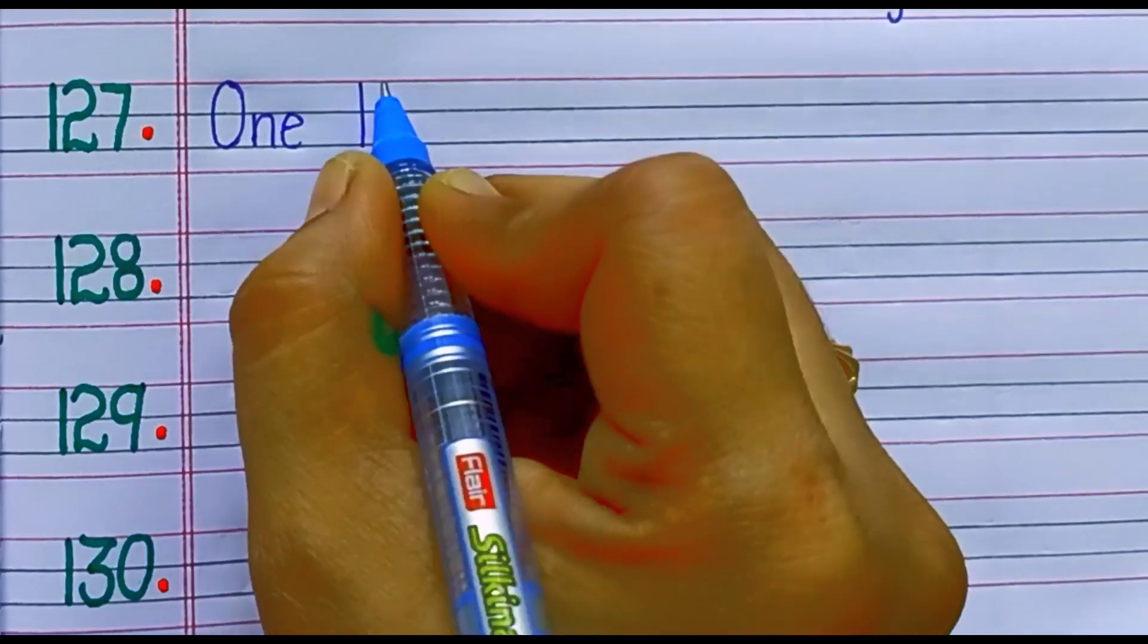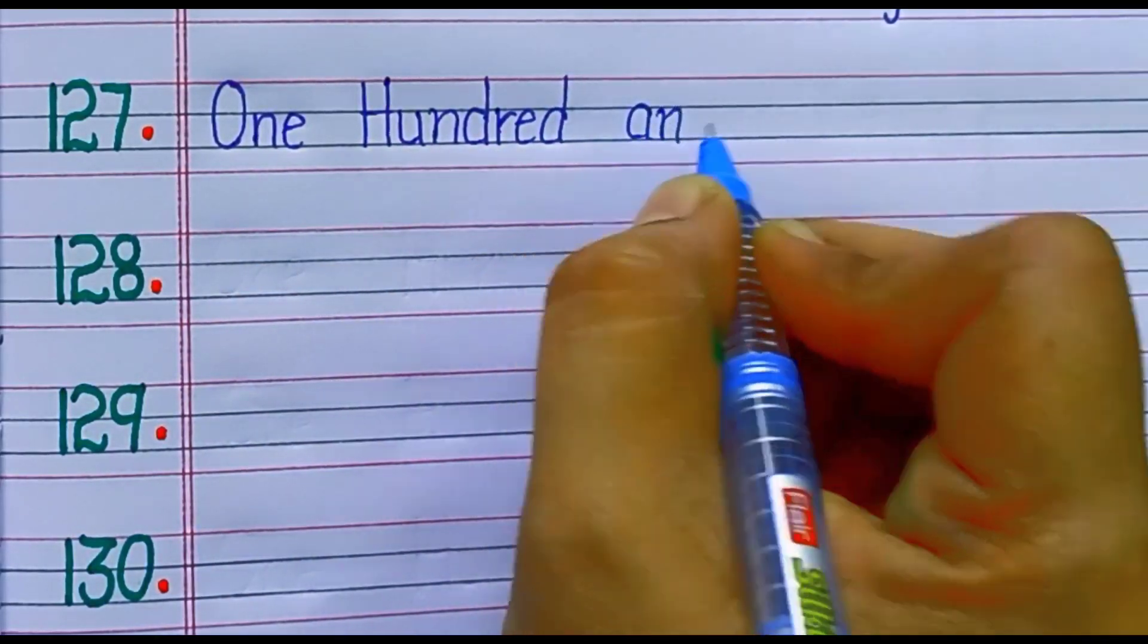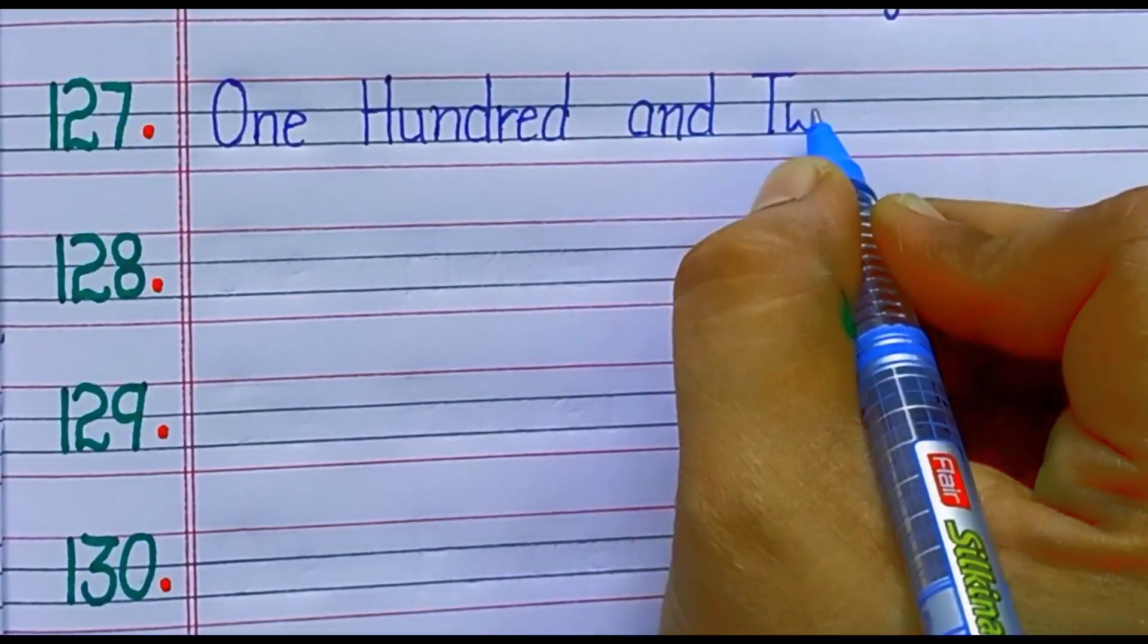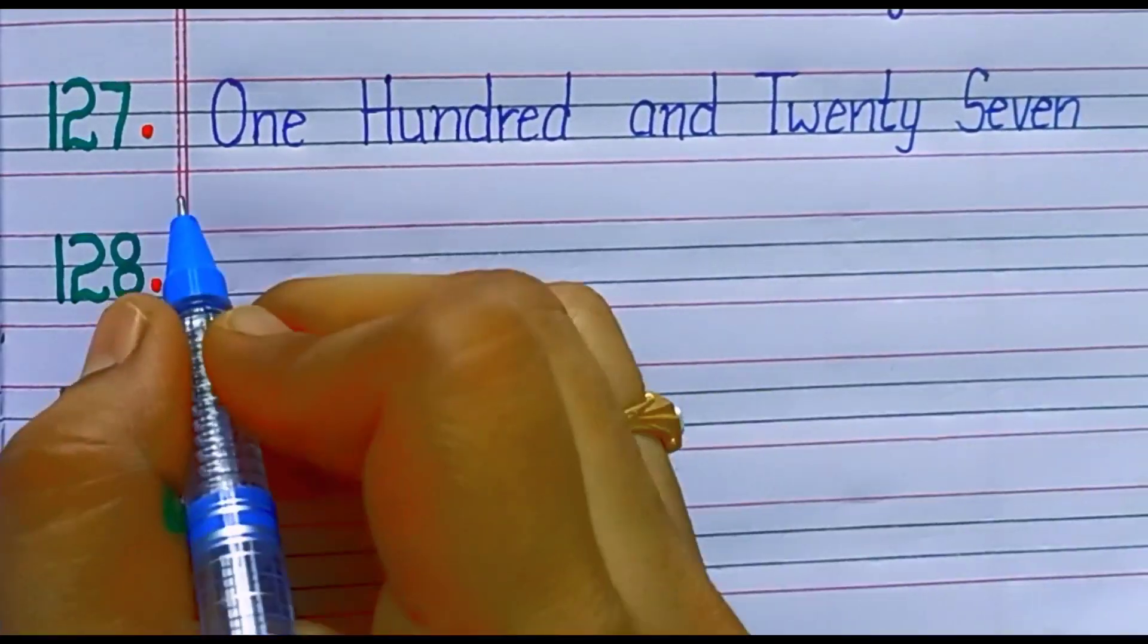127. One hundred twenty-seven. T-W-E-N-T-Y, twenty. S-E-V-E-N, seven.